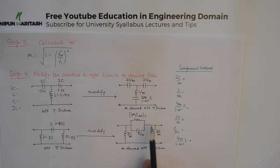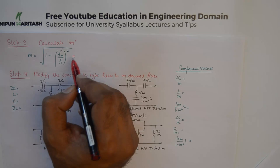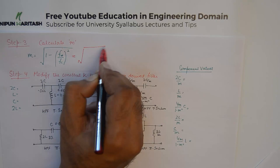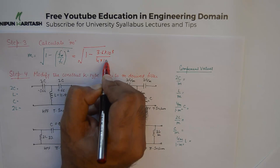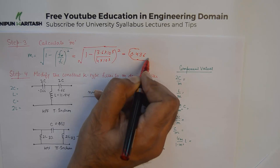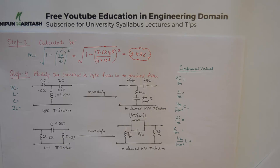The first requirement is to calculate m, which for a high pass filter is m = f_infinity / fc. Substituting the values: 3.6 × 10³ / 4 × 10³, you get m = 0.436. I want to reiterate that the value of m must remain between 0 and 1. Using this value of m along with the values of C and L calculated earlier, we can now find all component values.